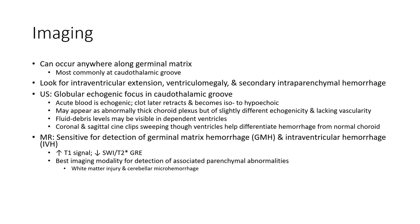Acute blood is echogenic. Blood later retracts and becomes iso- to hypoechoic. May appear as abnormally thickened choroid plexus but with slightly different echogenicity and lacking vascularity. Fluid debris level may be visible in the dependent ventricle. Coronal and sagittal views help differentiate hemorrhage from normal choroid plexus.